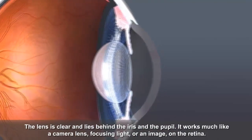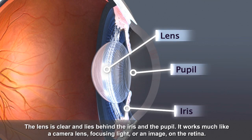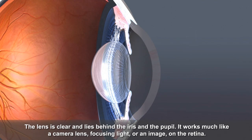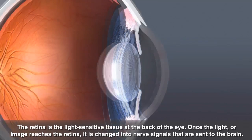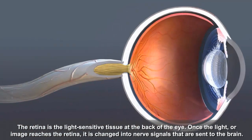The lens is clear and lies behind the iris and the pupil. It works much like a camera lens, focusing light, or an image, on the retina. The retina is the light-sensitive tissue at the back of the eye.